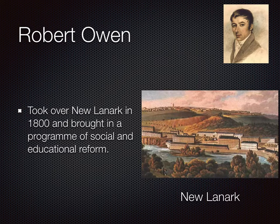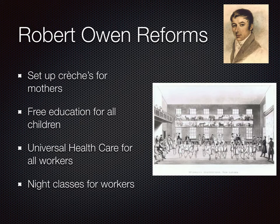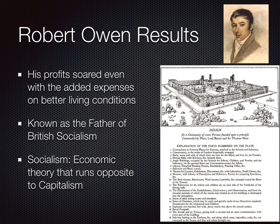Before these reforms, some factory owners actually took it upon themselves to try and improve conditions. Probably the most famous was a Welsh man known as Robert Owen. Owen took over a factory in New Lanark in Scotland in 1800 and brought in a programme of social and educational reform. He set up crèches for mothers, gave free education for all children, gave universal health care for his workers — something many people still don't have today — and offered night classes for his workers. His profits soared even with the added expenses, and because of this Robert Owen is really seen as the father of British socialism, someone who put people ahead of economics.